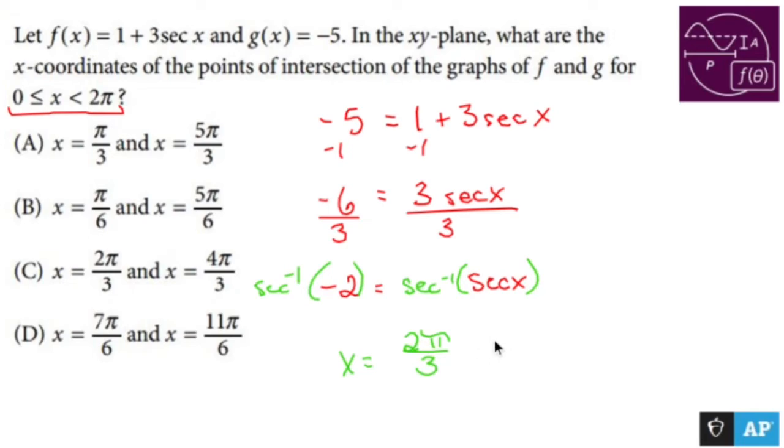Now, secant is negative, and remember, the secant right here is negative. The same spots that cosine's negative, and that's quadrant 2 and quadrant 3.